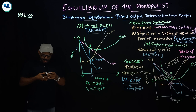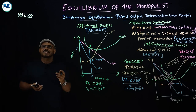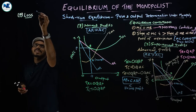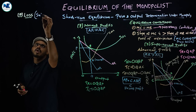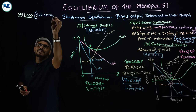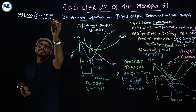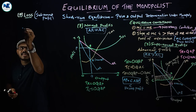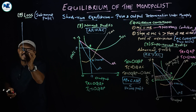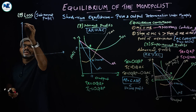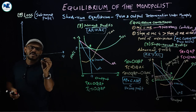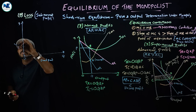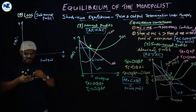Now we are going to draw — and this is really very interesting — the form showing losses. We are getting a subnormal profit. Here we have a graph with axis OQ for output and OY for price, revenue, and cost.